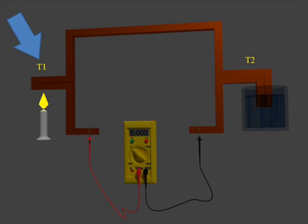Here the temperature of this hot junction is T1 and temperature of cold junction is T2. There is a temperature difference between these two junctions, T1 minus T2, but still the multimeter gives zero reading as the junctions are made of the same metals.